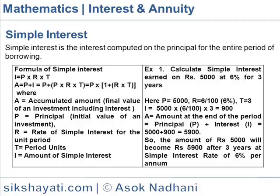A = Amount at the end of the period = Principal P + Interest I = 5000 + 900 = 5900. So the amount of Rs.5000 will become Rs.5900 after 3 years at a Simple Interest Rate of 6%.